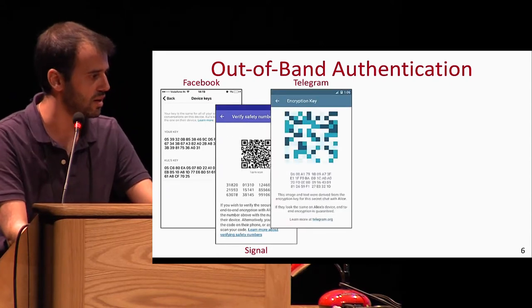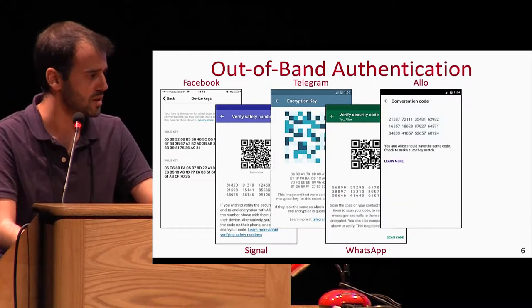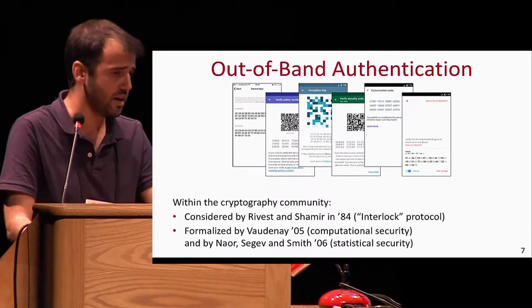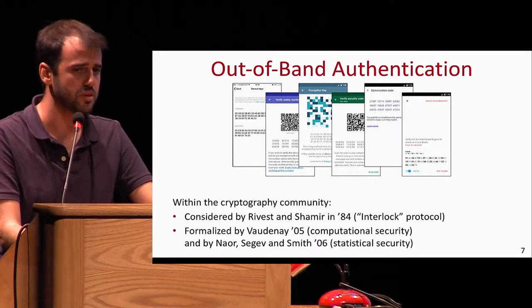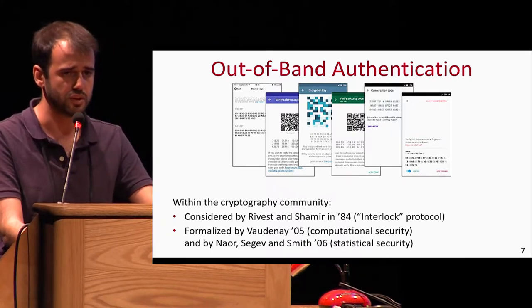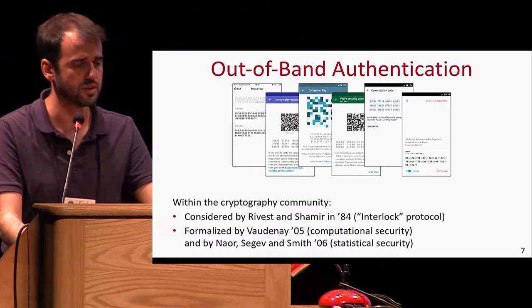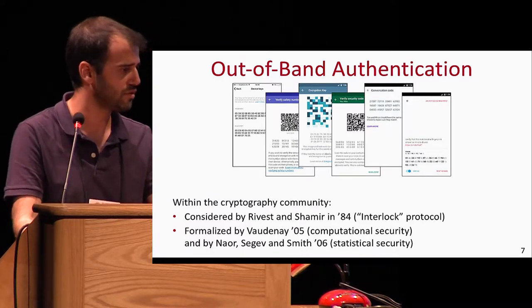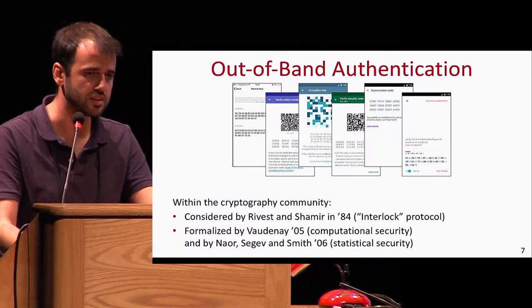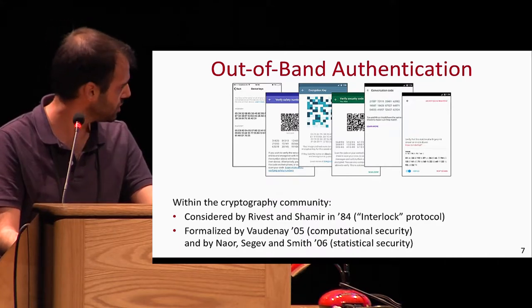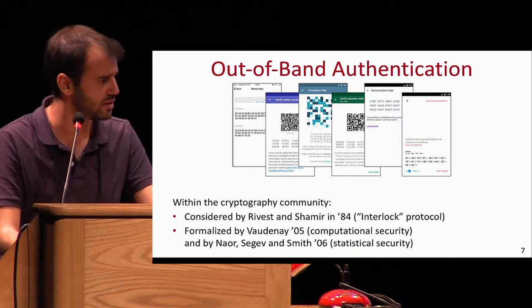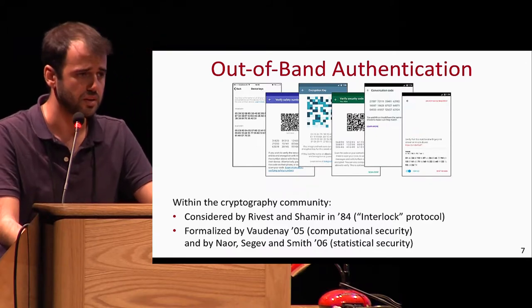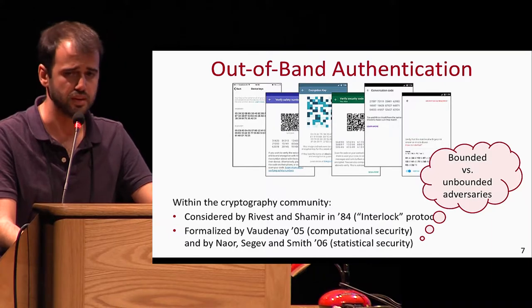This model is used today not only by WhatsApp but by most messaging applications providing end-to-end encryption. It was also considered within the cryptographic community: in 1984, Rivest and Shamir introduced the interlock protocol, which also assumed that users recognized each other's voice. About 20 years later, this model was formalized by Baudenet in the computational setting, and by Naor et al. in the statistical setting, considering bounded and unbounded adversaries respectively.